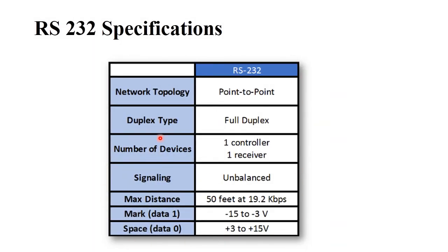The RS-232 specifications are as follows: RS-232 uses point-to-point network topology because it uses a serial data cable for data transmission. It is a full duplex type with one controller and one receiver. Unbalanced signaling is used for communication. The maximum distance is 50 feet, as it uses a serial cable for data transfer, with a length of 50 feet at 19.2 kbps speed. A positive voltage power supply is required for data transmission. These are the specifications of RS-232 protocol.